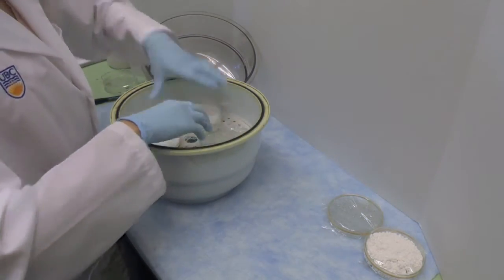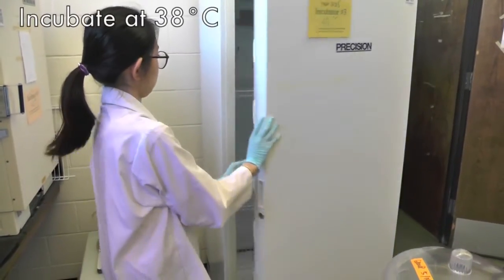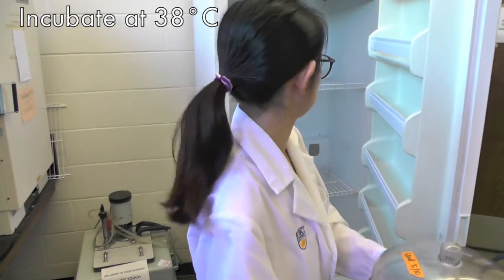Using empty petri plates covers as spacers, place the desiccator in a 38 degree Celsius incubator.